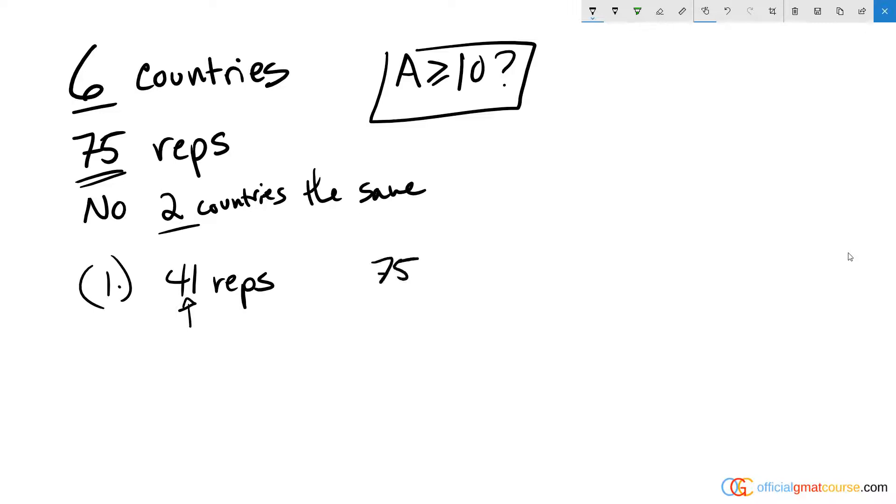Now, if that country sends 41 reps, is it possible that we could have country A send more than 10 reps? So we would need to send 34 reps. Well, in order to maximize A to try to push it over 10, I'm going to minimize the other four countries by making them one, two, three, and four reps.